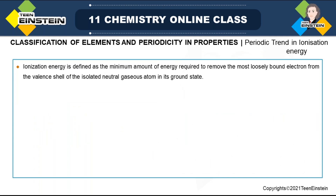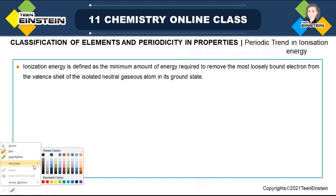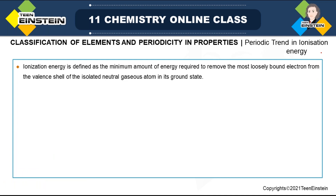Now we will start the periodic trend in different properties. The first property is ionization energy, sometimes also called ionization enthalpy. It is defined as the minimum amount of energy required to remove the most loosely bound electron from the valence shell — not just from any shell but specifically the valence shell — under specific conditions: the atom must be an isolated, neutral, gaseous atom.